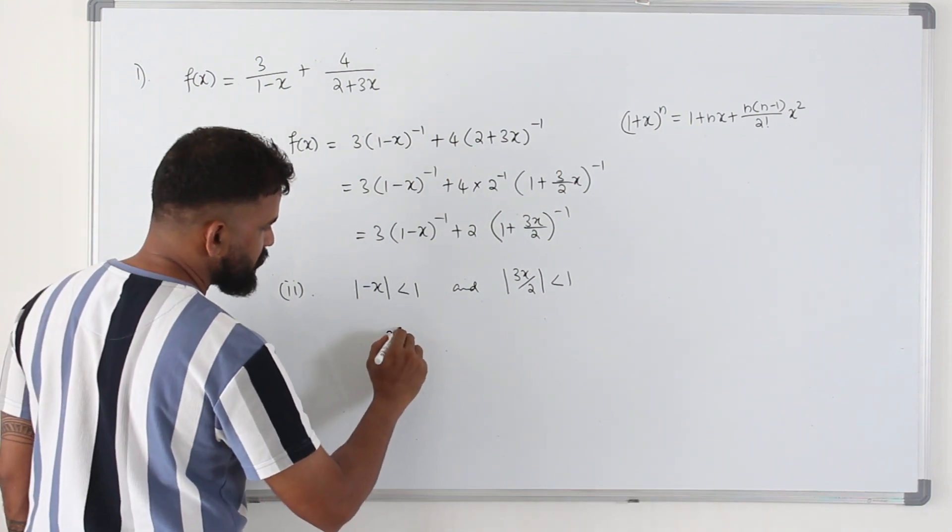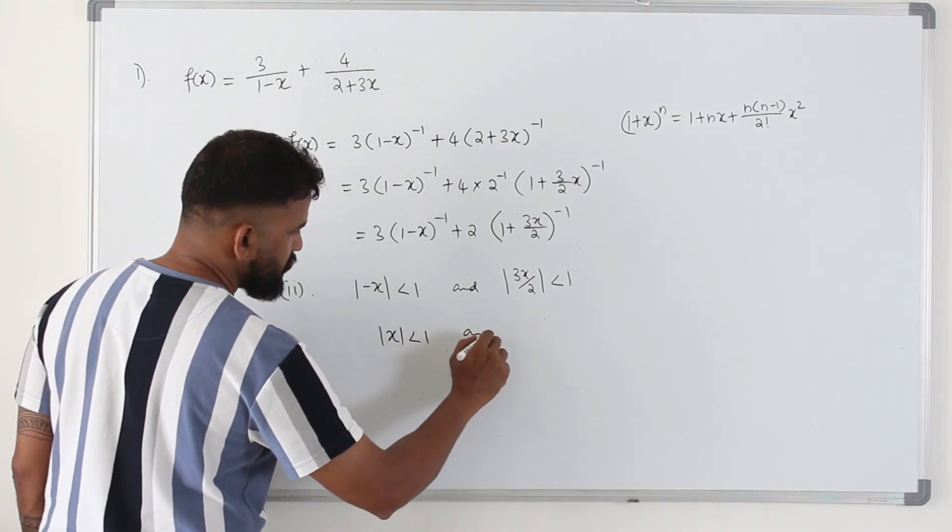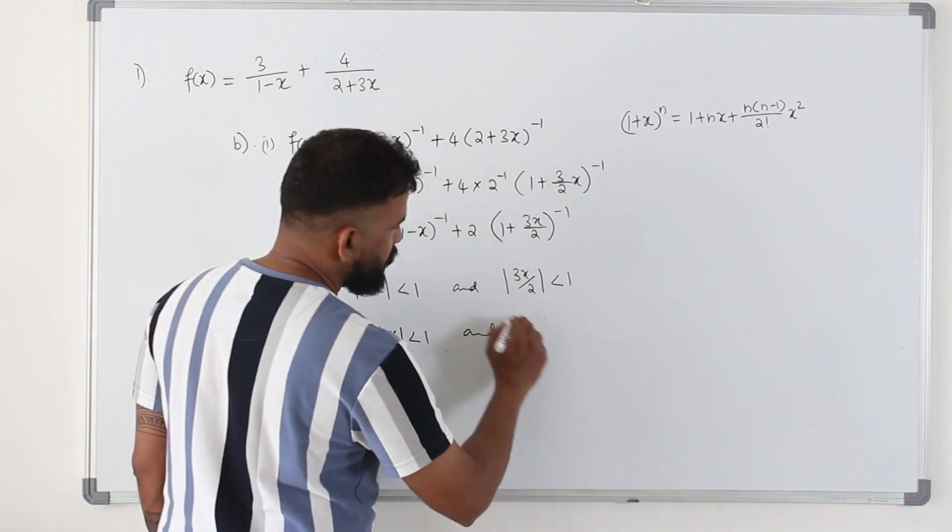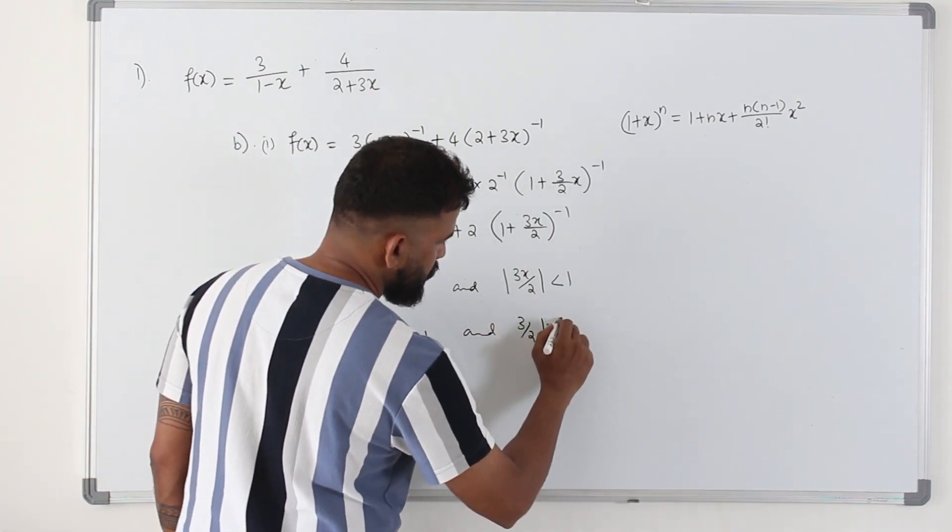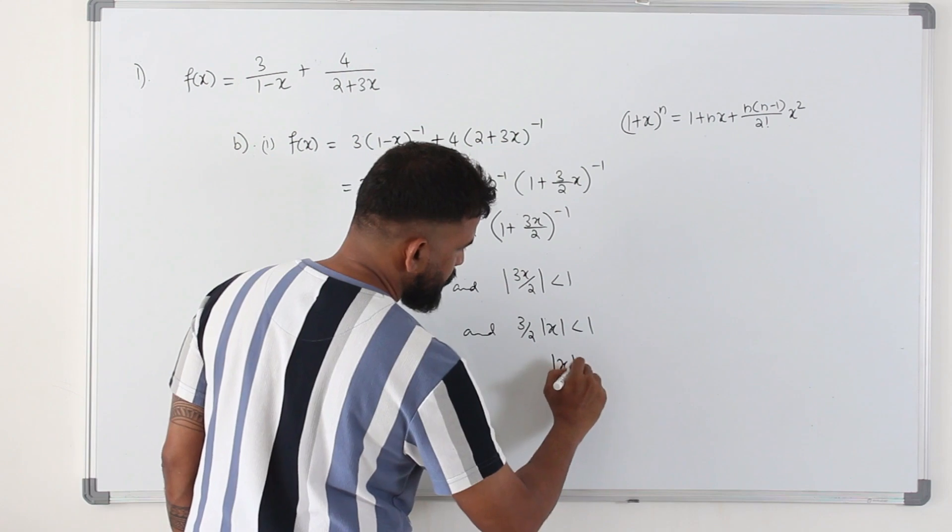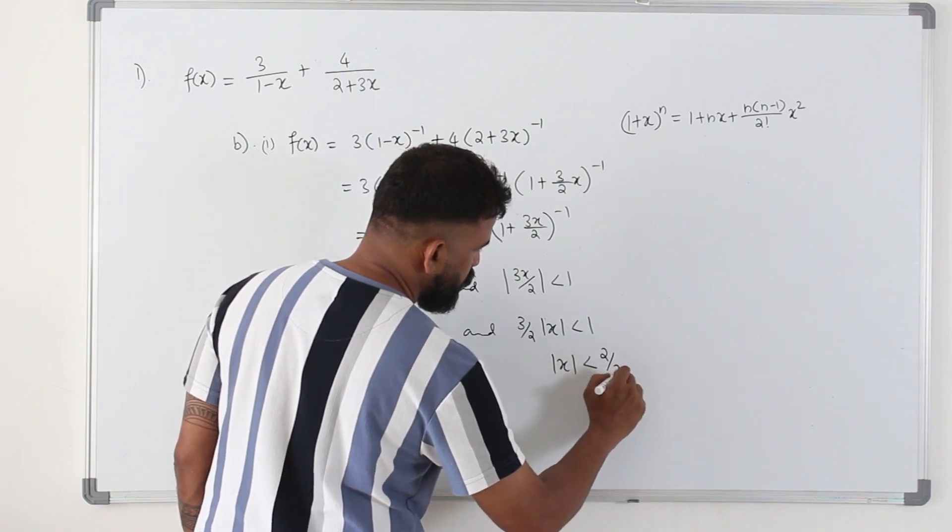Modulus of minus x is basically x. Modulus x is less than 1. And bring 3 over 2 outside. So modulus x is less than 2 over 3. Bring it here.